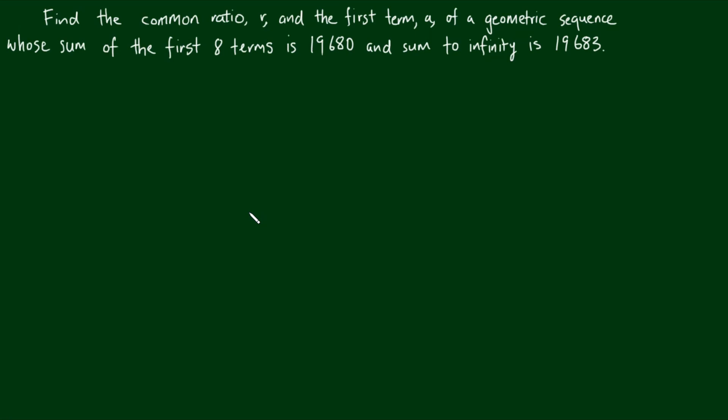Find the common ratio r and the first term a of a geometric sequence whose sum of the first eight terms is 19,680 and the sum to infinity is 19,683.